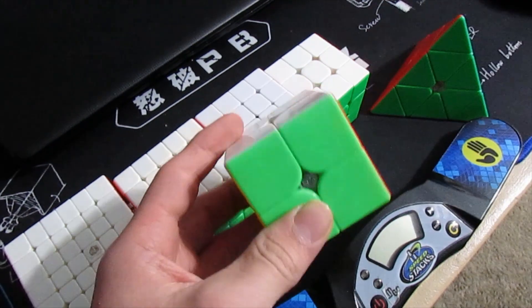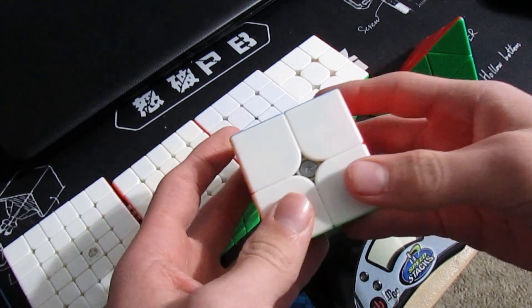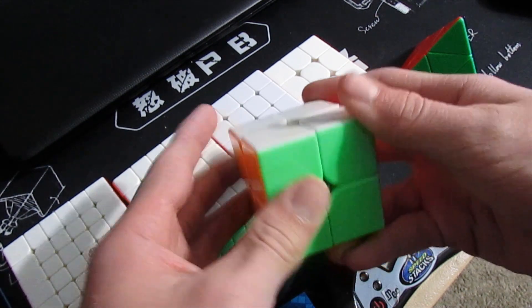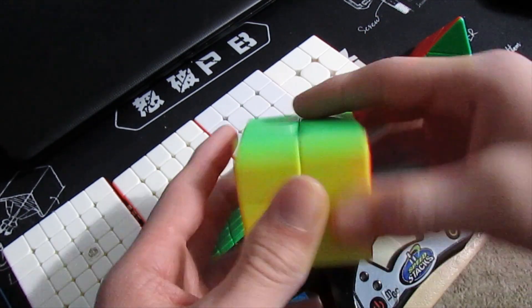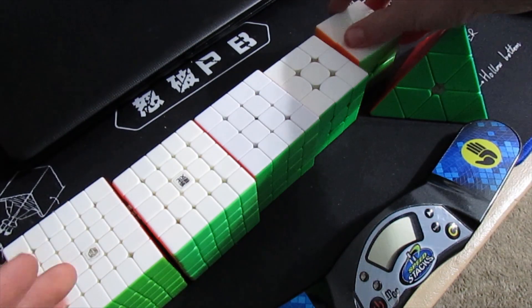Let's start with 2x2. I'm using my YJMGC 2x2 and hoping to get a sub-4 average and sub-3.5 single. You guys know I don't really care too much about 2x2.